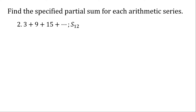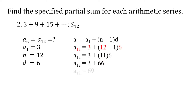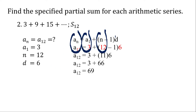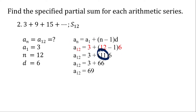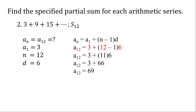For number 2, same process — we need first to solve for a sub 12. a sub 1 is 3, n is 12, and common difference is 6. I substitute all the values. 12 minus 1 is 11, then 11 times 6 is 66, and 66 plus 3 is 69. So the value for a sub 12 is 69.